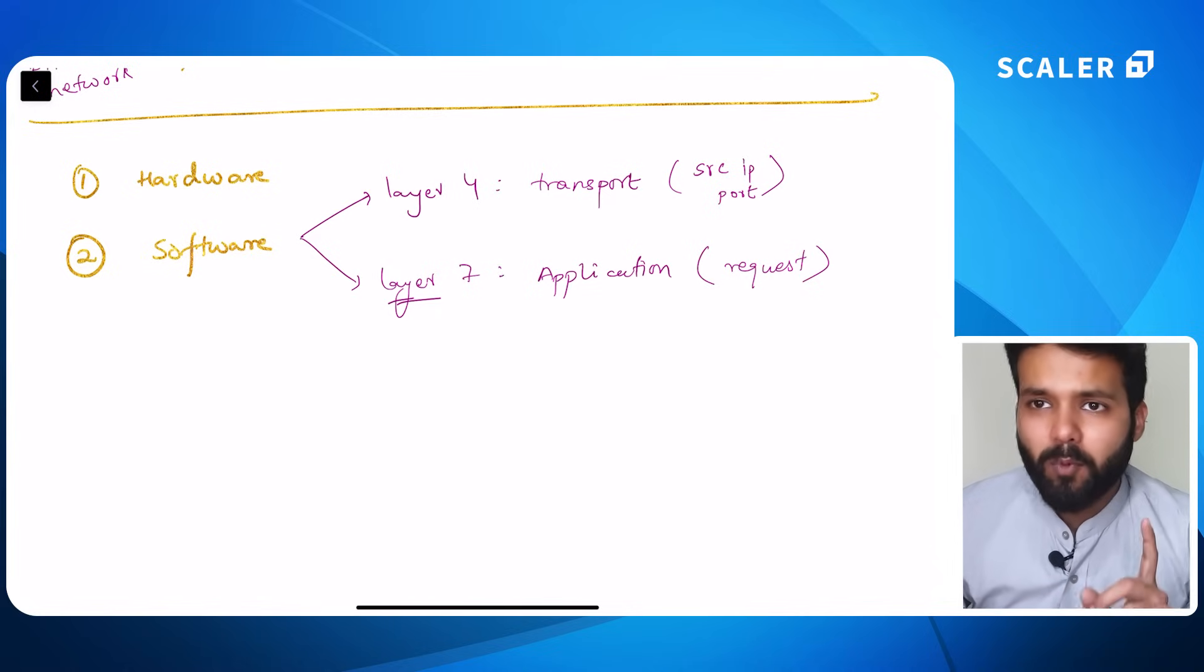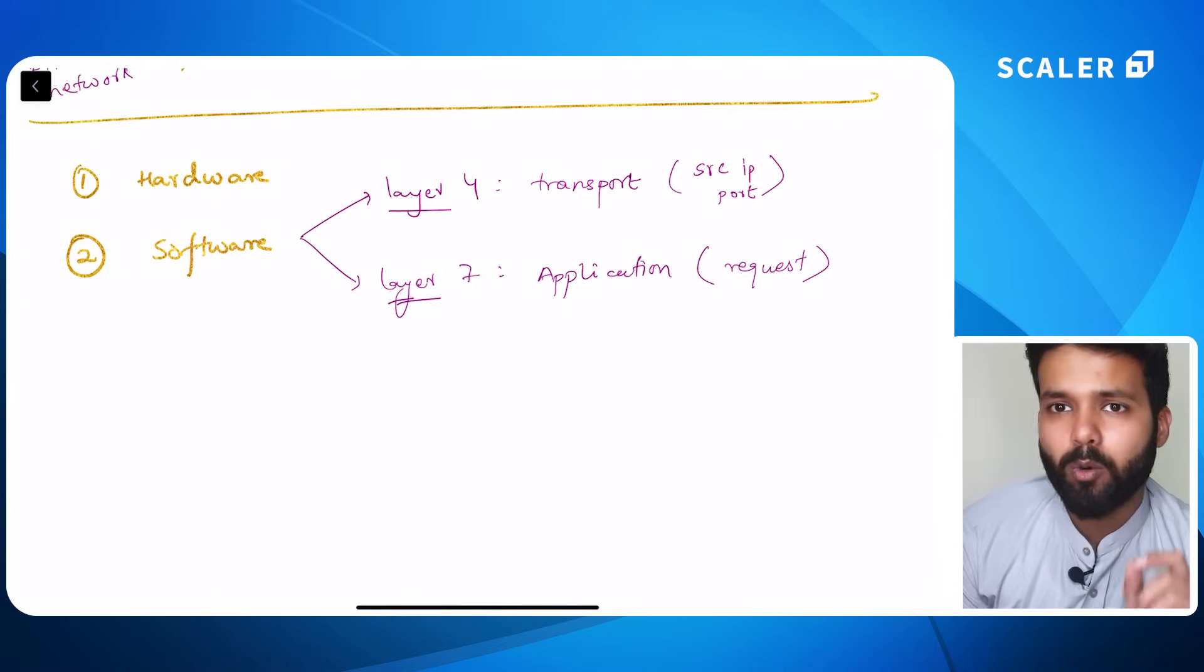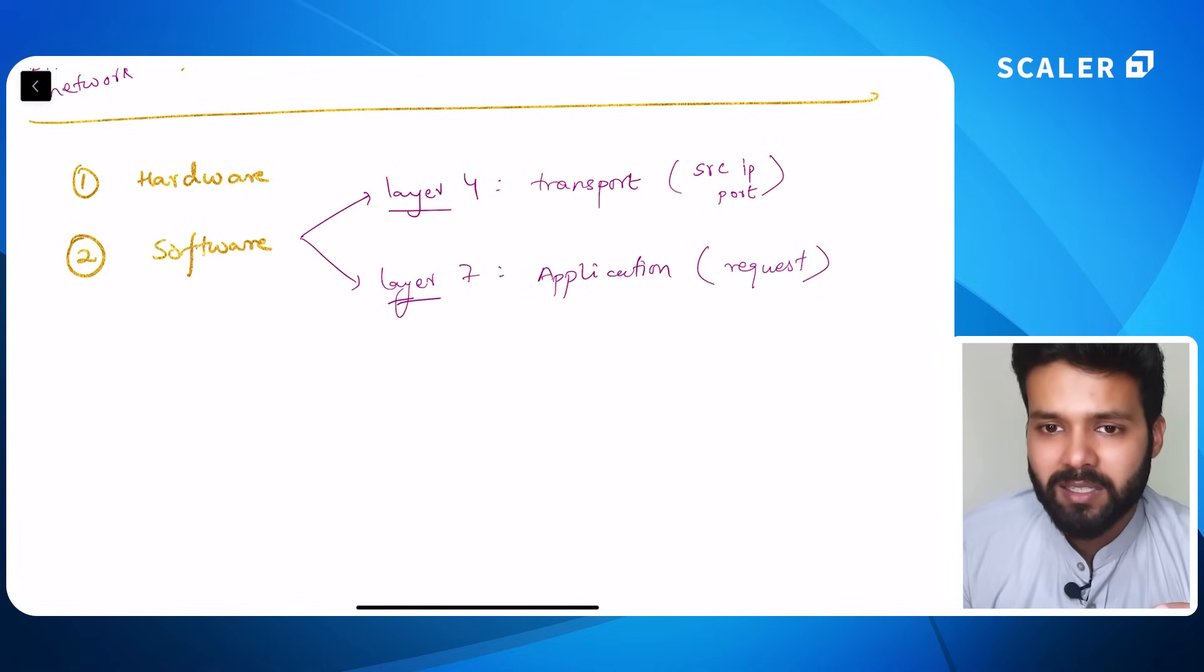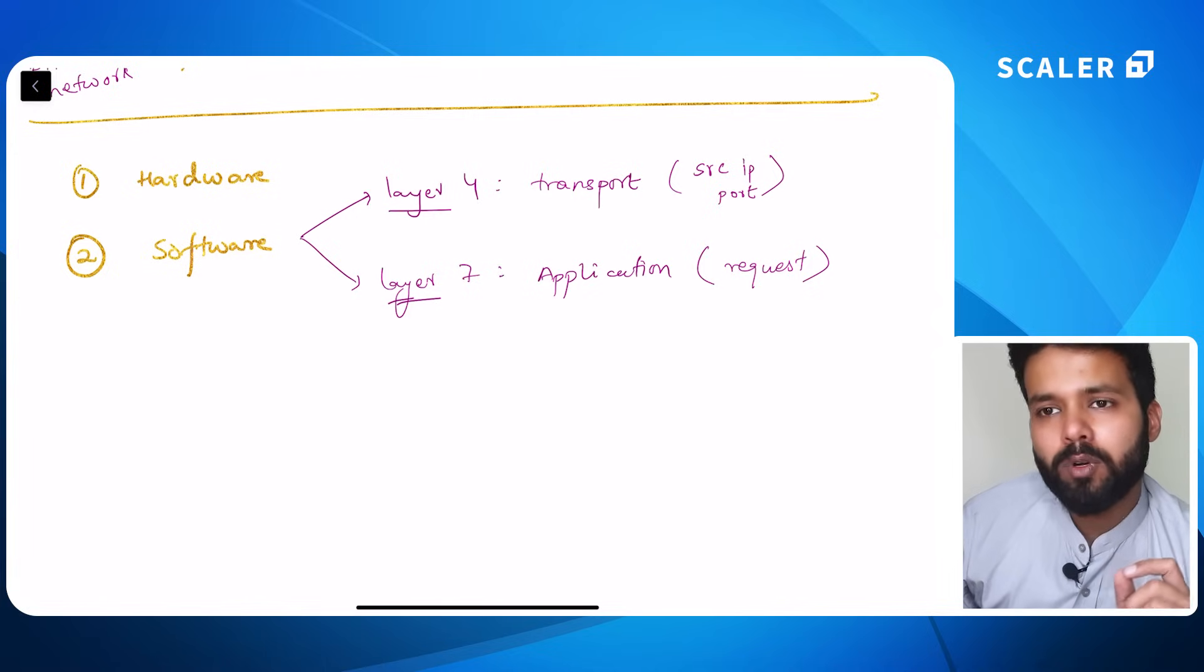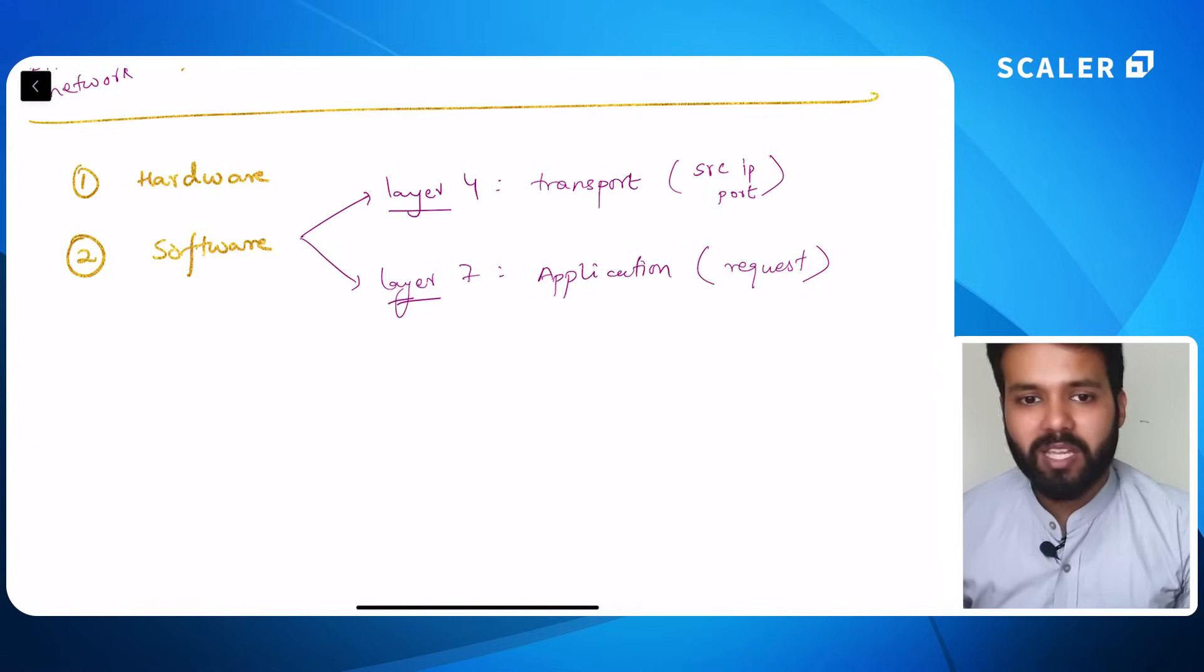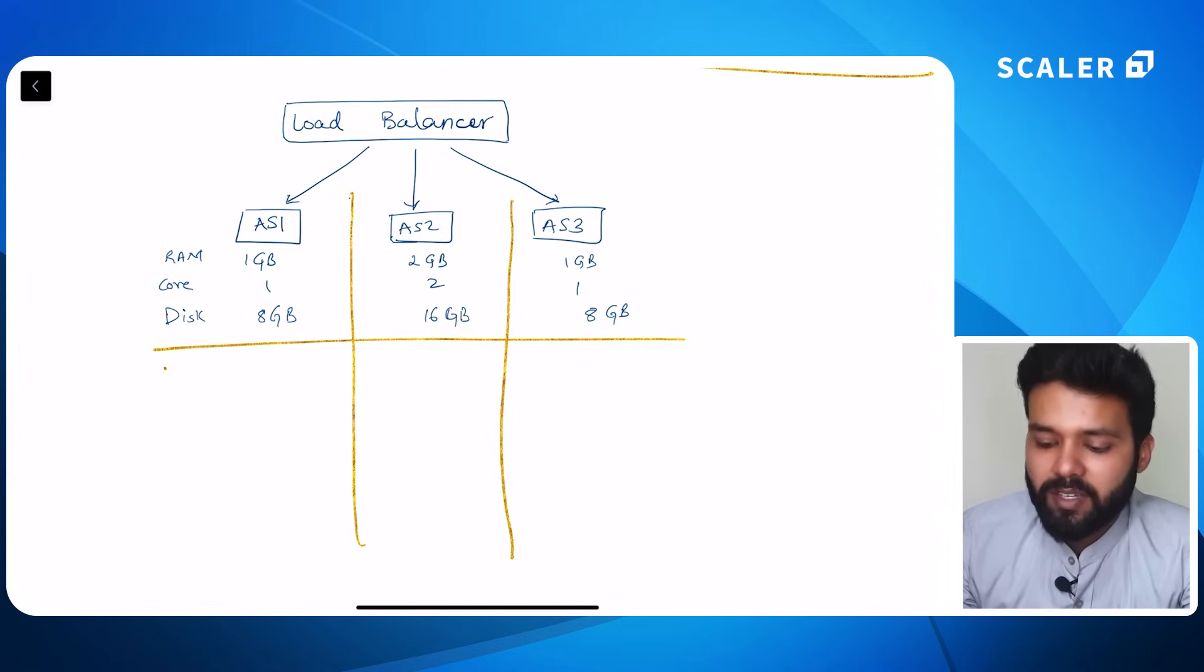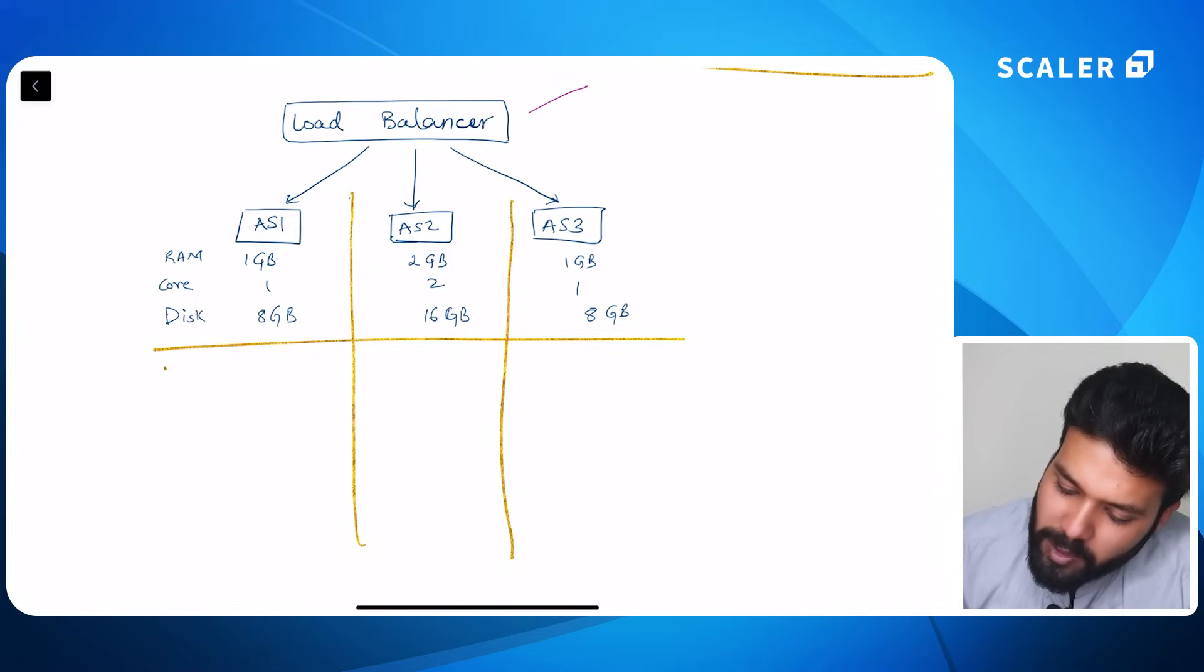However, there is one more distinction why you should still use layer 4 in some cases. Because in layer 4, we are exposing only minimal information to the load balancer. We are only exposing the source IP address and nothing else. Hence, layer 4 load balancers are slightly more secure as compared to layer 7 where we could extract the entire information about our incoming request. The last thing that we want to look at is how do we even route traffic from a load balancer to my available application servers.